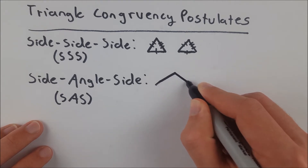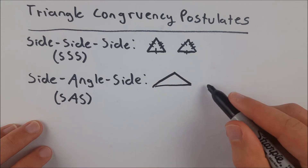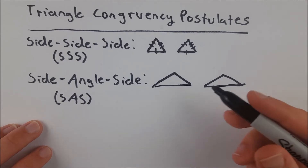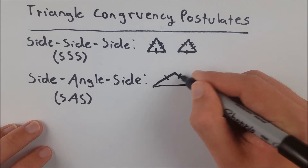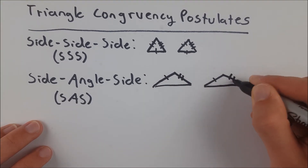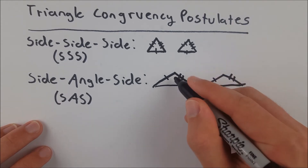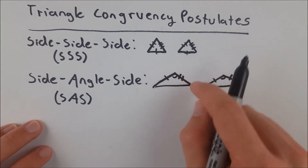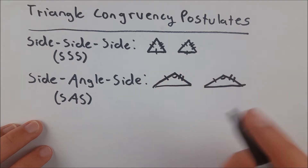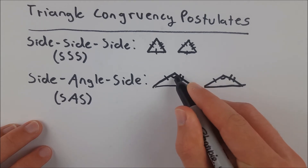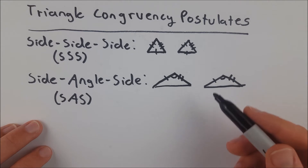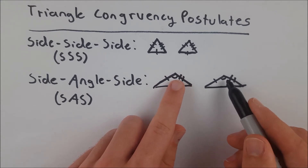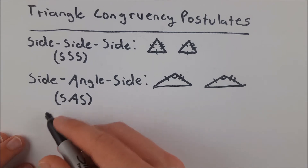So let's look at an example of this. The side-angle-side postulate says if we have two sides congruent — let's say this side's congruent to this side, and this side's congruent to this side — and their included angle is congruent, which means the angle between those two sides is congruent. So if it was these two sides, we'd be talking about this angle. In this case, that's the angle included between the two sides. If you have this between two triangles, then those triangles are congruent.